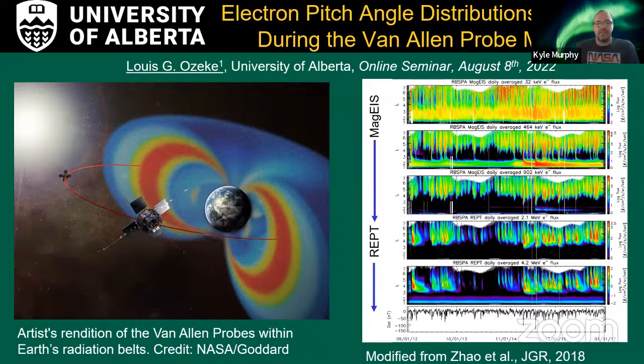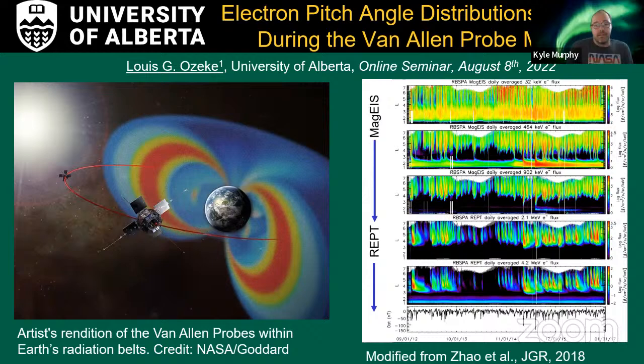Louis received his PhD in 2002 from the University of York in the UK. His research focused on modeling the properties of standing ULF waves in the Earth's magnetosphere and how these waves can be generated by the recurrent plasma population. Following his PhD, he moved to Canada to work at the University of Alberta, where he began studying wave-particle interactions and, in particular, the coupling of ULF waves with radiation belt electrons.